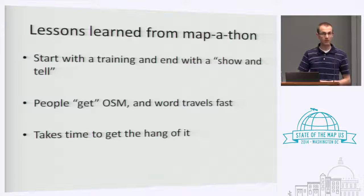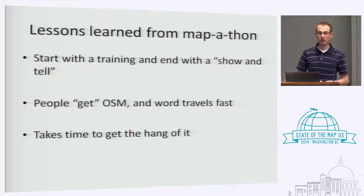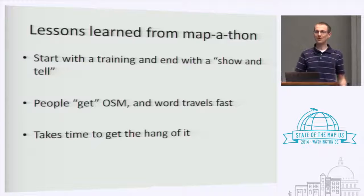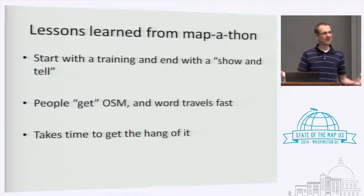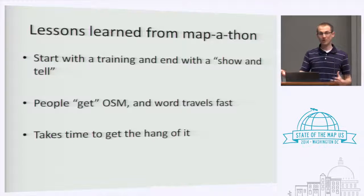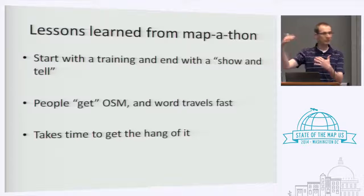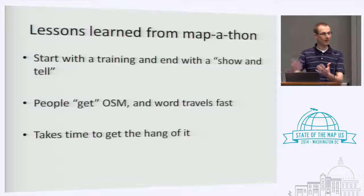A lesson I learned from this is that people really get OpenStreetMap — they get excited about it. They can be trained in a short amount of time, maybe half an hour to 45 minutes. However, when they get started it can take a while to get the hang of it. They were successful at putting things into OSM, but they didn't get quite as much work done as we had thought during three or four hours. So plan for that if you do a mapathon. Some of them were very enthusiastic and took work home. We had task sheets of certain things, which was helpful — we could just hand them a piece of paper with some tags and a task, and they really grew with that.